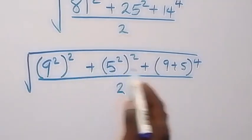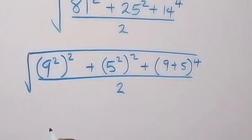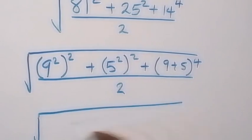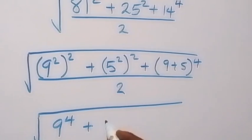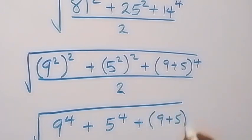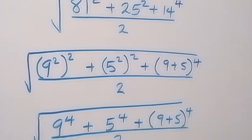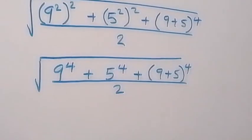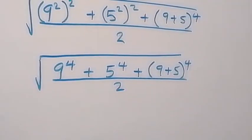This part will multiply from the law of indices, and this becomes square root of 9 raised to power 4, then plus 5 raised to power 4, then plus here we have 9 plus 5, which is 14, raised to power 4, then divided by 2.